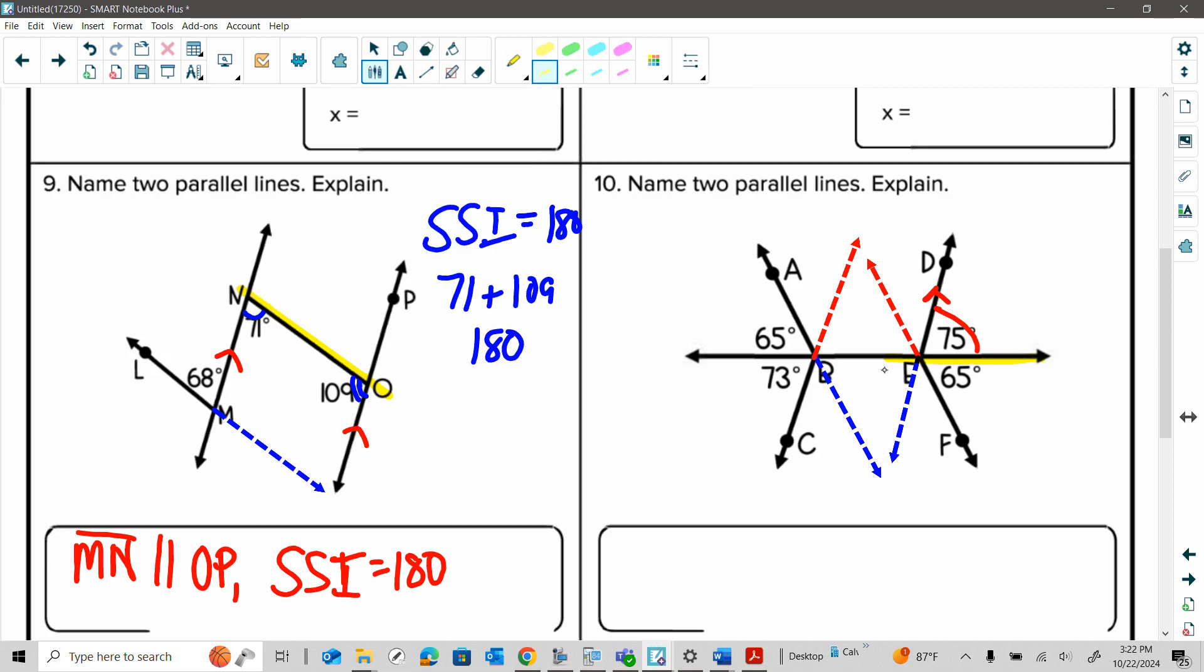So this would be my transversal. Then I'm actually looking at the 75 and then the 65. And if I look at those, those have to be same side exterior. If I'm using those angles there. And that is not going to give me 180. So I want to probably go to the other one here.